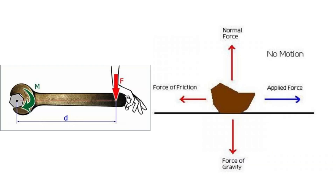In essence, torque is a specific type of moment where rotation is occurring. A moment is a more general concept, encompassing both situations where there is rotation — in which case it can be called torque — and where there is only a potential for rotation in static situations.